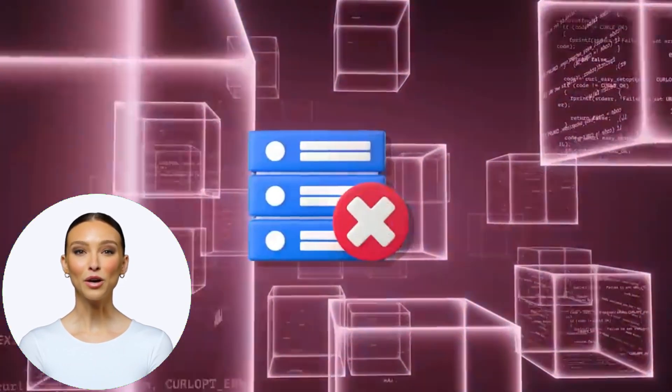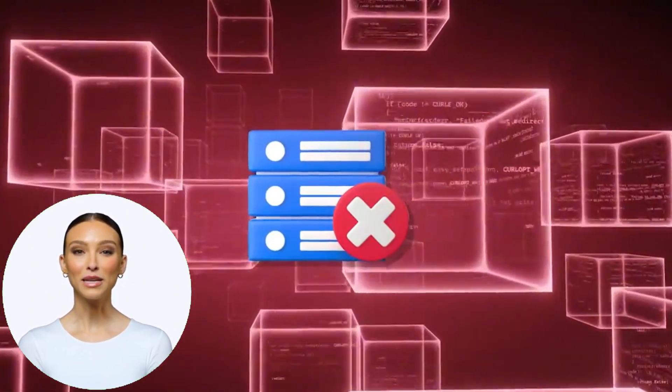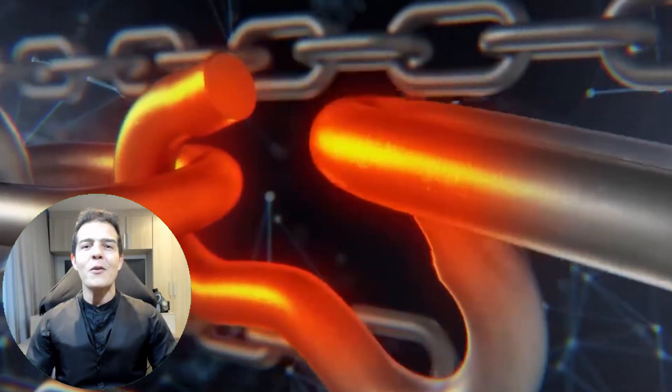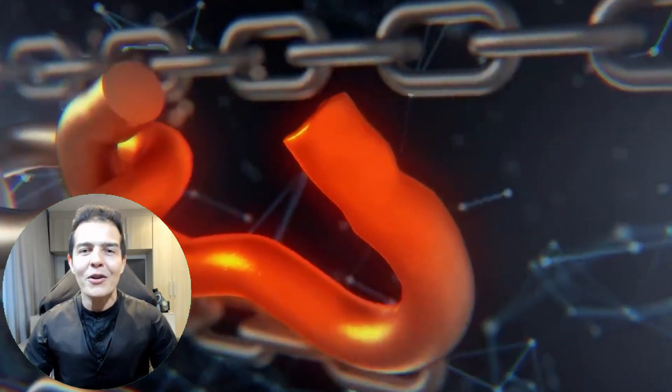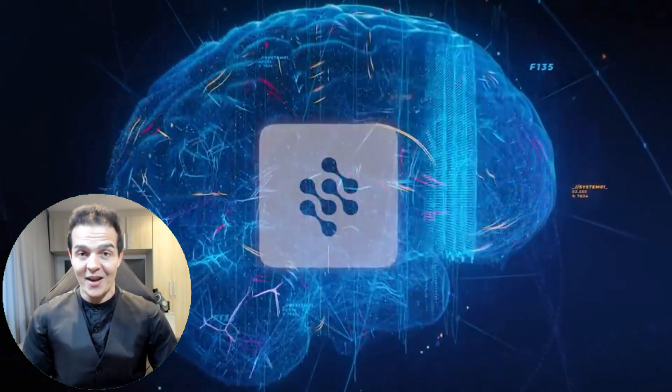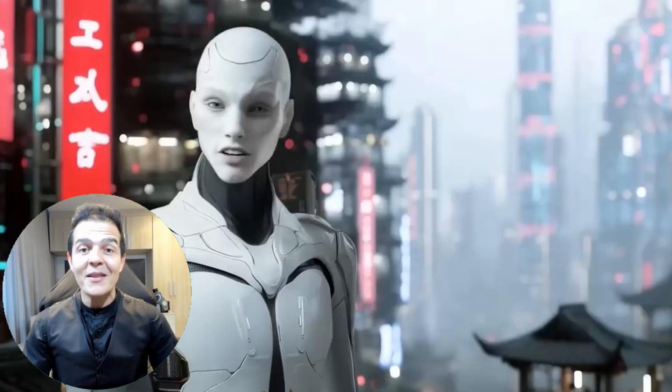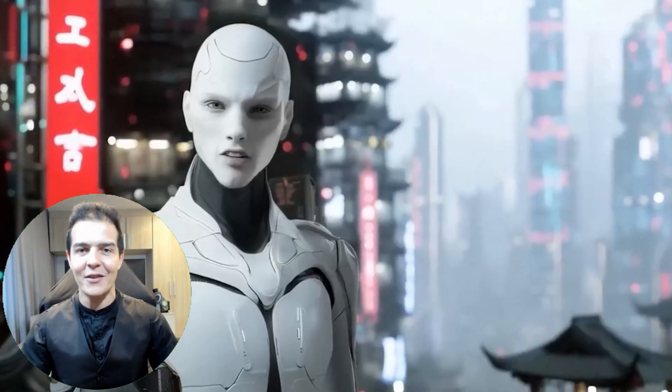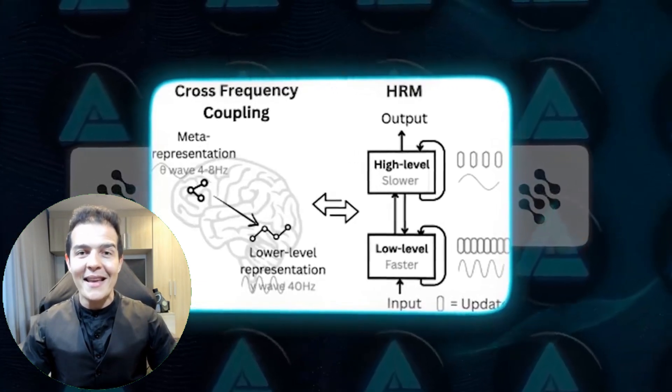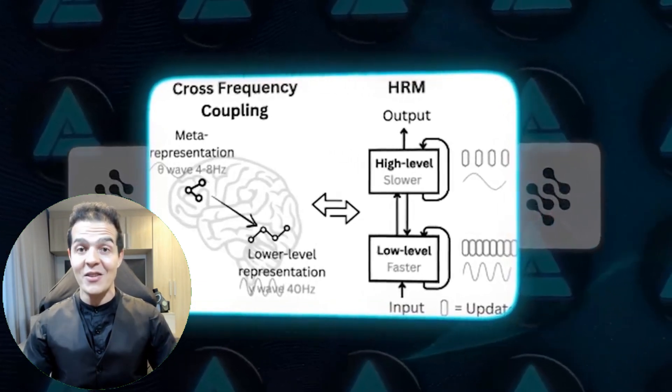Most current models rely on what we call chain-of-thought prompting, which is basically the AI talking to itself to solve a problem. And that seems smart, and sometimes it works. But if the AI makes a single error in that chain, the entire answer falls apart. The HRM simply ignores that. It doesn't rely on the chain holding up. It reasons like a human, thinking strategically and then executing quickly.